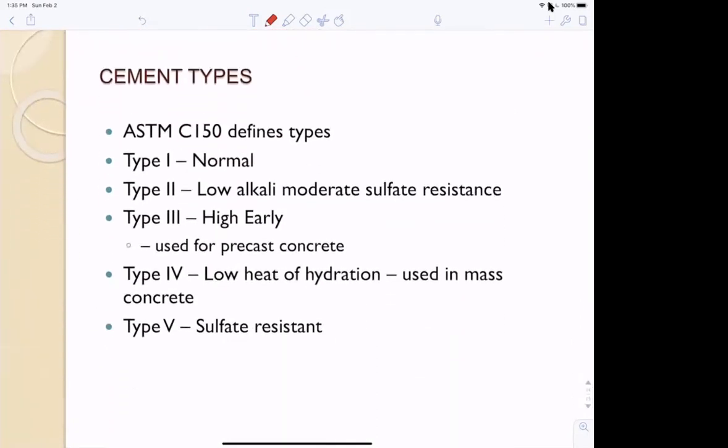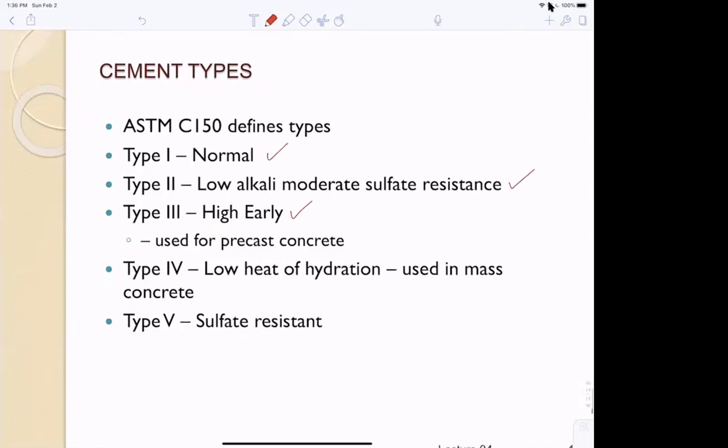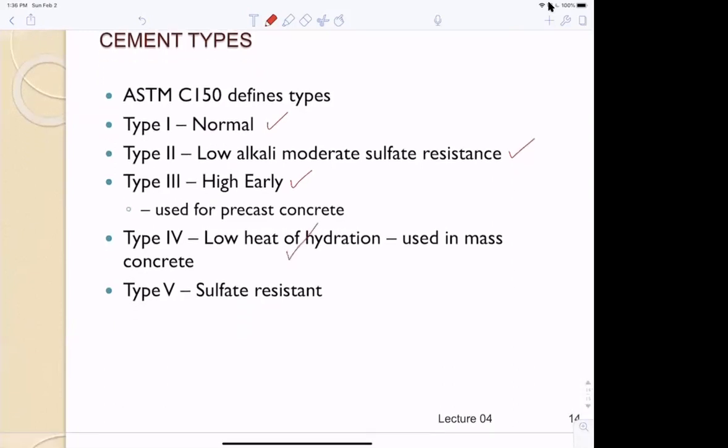There are different cement types that you can use. ASTM C150 defines types: Type I is normal, Type II is low alkali with moderate sulfate resistance, Type III is high early used for precast concrete, Type IV is low heat of hydration used in mass concrete like dams to reduce heat, and Type V is sulfate resistant. There's a cement plant in town, Mountain Cement - they only make high early.